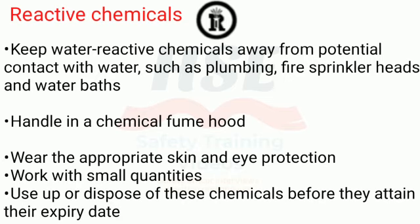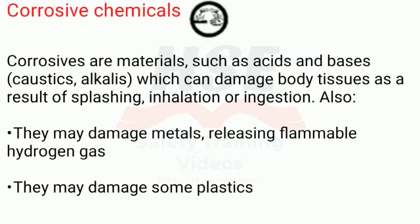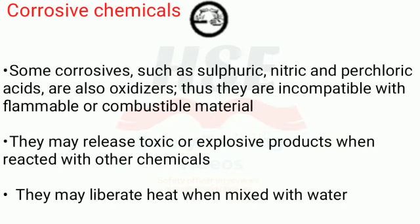Corrosive chemicals: corrosives are materials such as acids and bases (caustics/alkalis) which can damage body tissues as a result of splashing, inhalation, or ingestion. They may also damage metals, releasing flammable hydrogen gas, and may damage some plastics. Some corrosives such as sulfuric, nitric, and perchloric acids are also oxidizers and are thus incompatible with flammable or combustible materials.